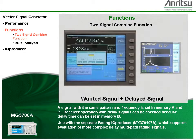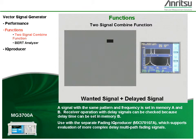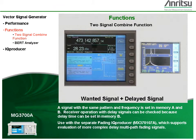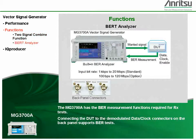A signal with the same pattern and frequency is set in memory A and B. Receiver operation with delay signals can be checked because delay time can be set in memory B. Used with a separate fading IQ producer, which supports evaluation of more complex delay multipath fading signals. The MG3700A has the BURR measurement functions required for Rx tests. Connecting the device under test to the demodulated data clock connectors on the back panel supports BURR tests.